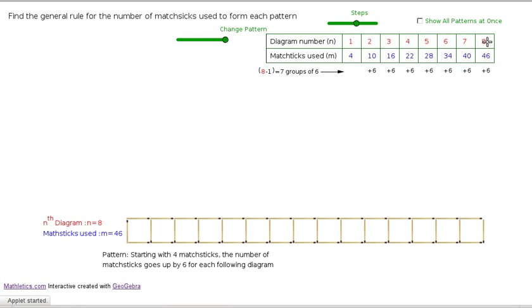So here we've got, we're on the 8th pattern, we've had to add 7 lots of 6. So you take, the pattern number is 8, and you subtract 1, and you get 7, and that's how many groups of 6 we've had to add to our original 4 to get this 46. So you write that down, m, the number of matches, is equal to 4, the original 4, plus 6 times the pattern number minus 1.